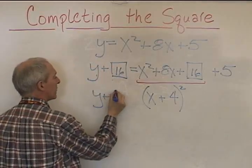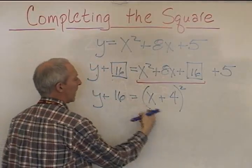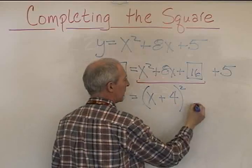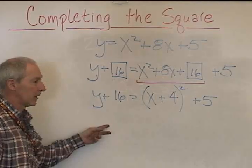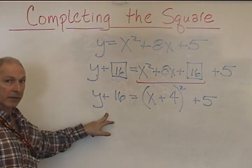y plus 16 is equal to x plus 4 quantity all squared plus 5. So we've restated it like this. The next step is to get y by itself.